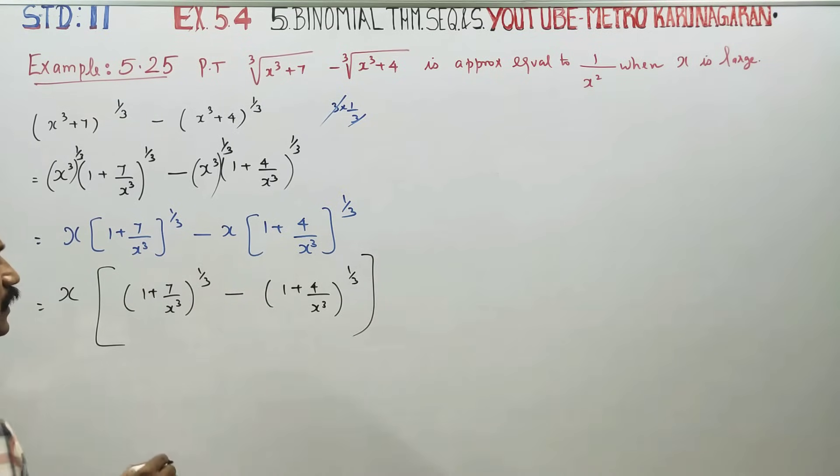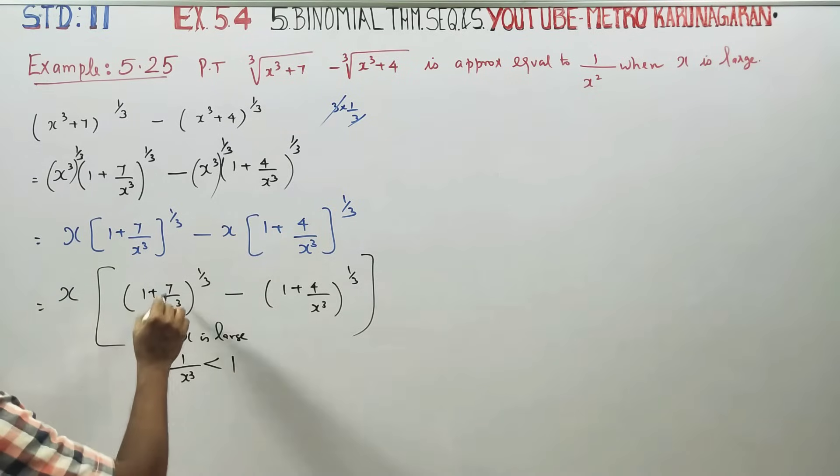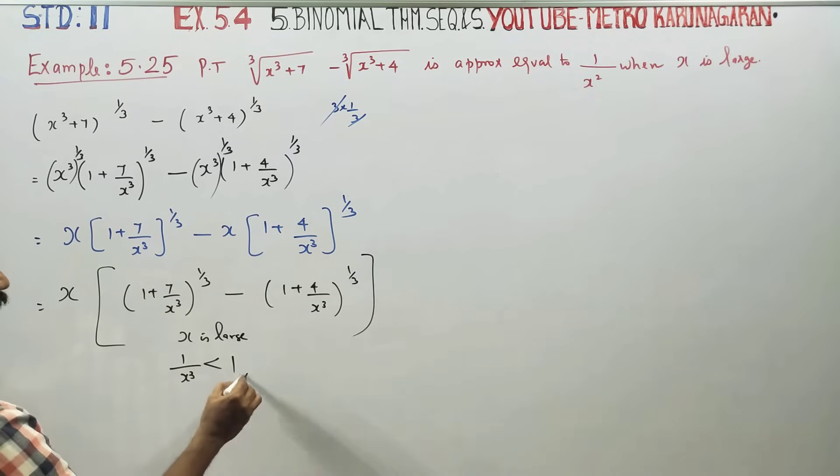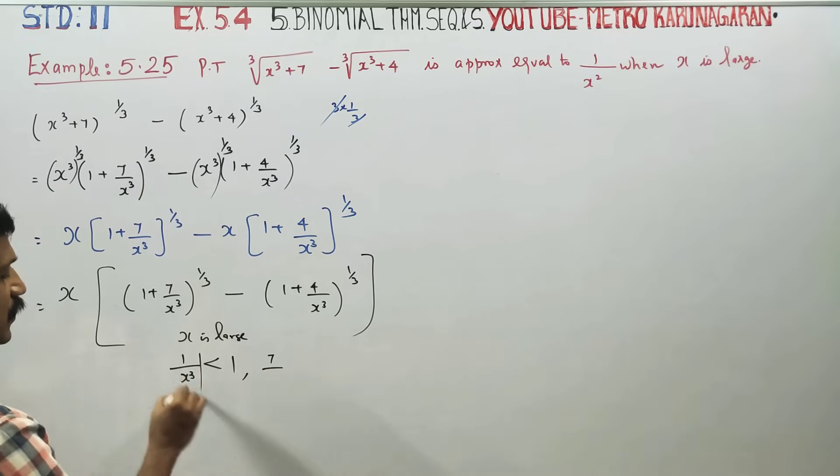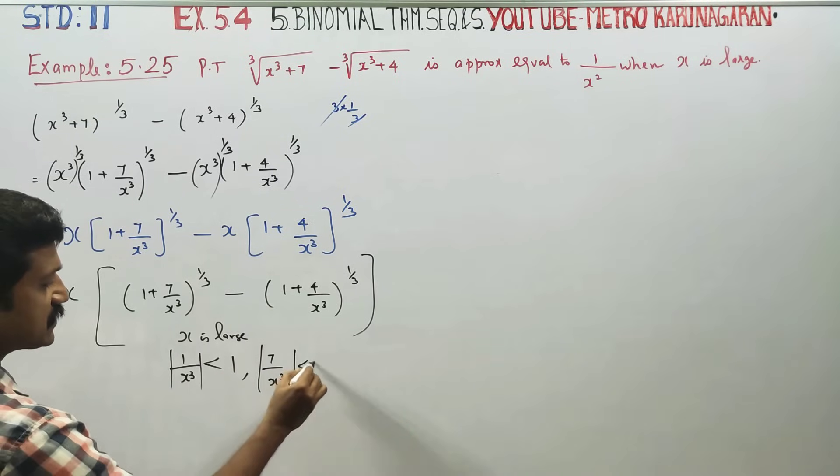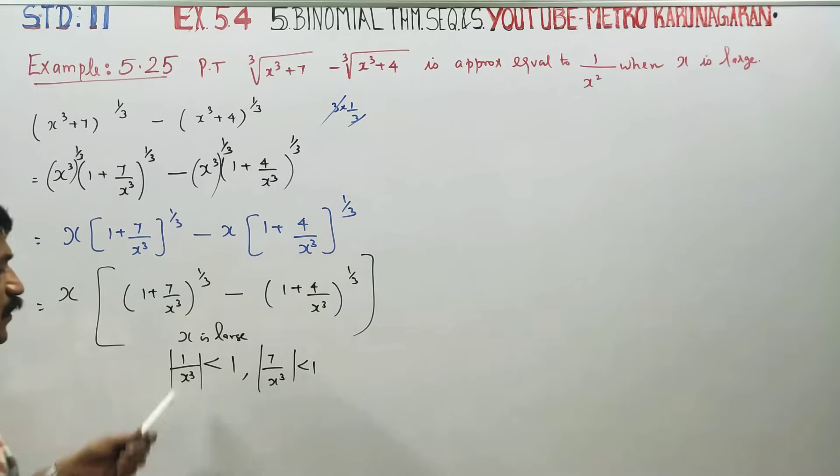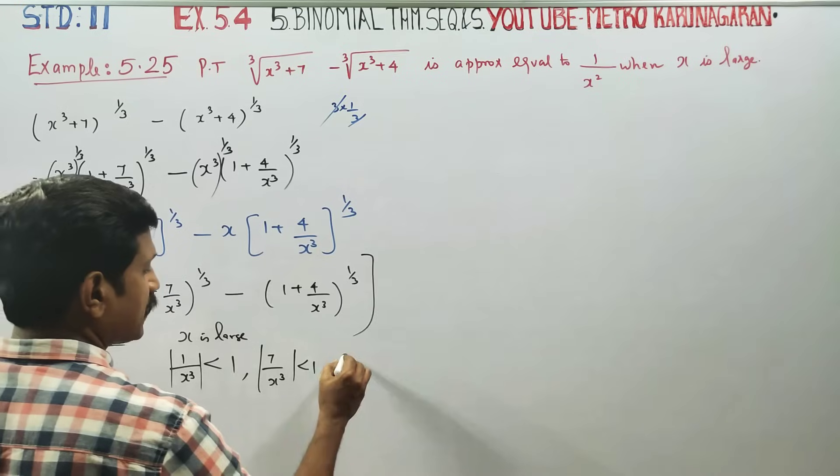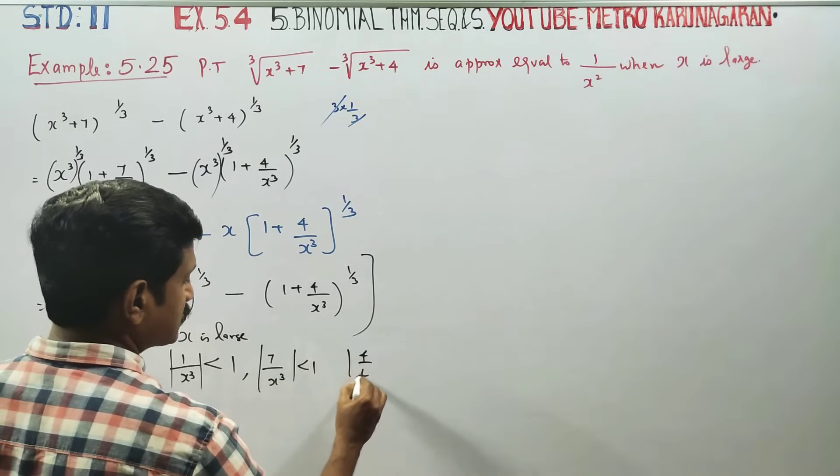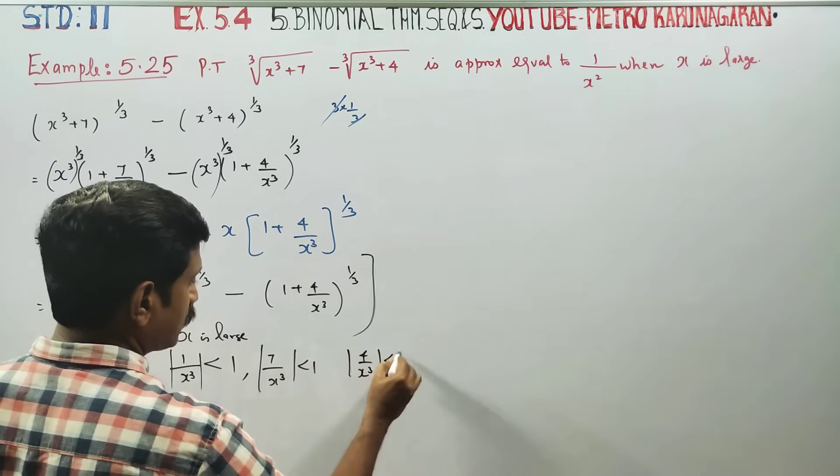Since 1/x³ is very small, less than 1, we use this rule. Therefore 7/x³ is less than 1, and similarly 4/x³ is less than 1. This is the key concept.